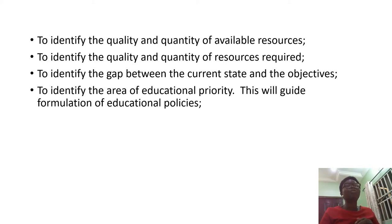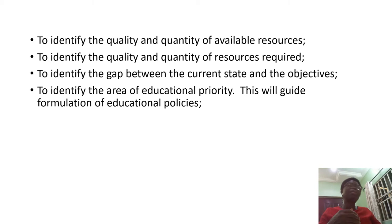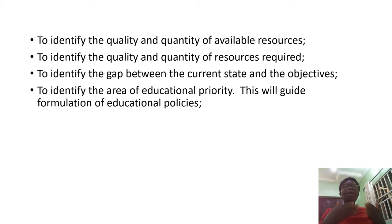The next point is to identify the areas of educational priority, which guides the formulation of educational policies. When talking about investing in education, you need to prioritize. Education is broad, but you need to find out — as I mentioned — across the different levels: primary, secondary, and tertiary. It's likely that the primary level has been taken care of and you need to focus on the secondary level, or vice versa. Depending on what is available, statistics help you determine which area is most urgent and needs to be prioritized.